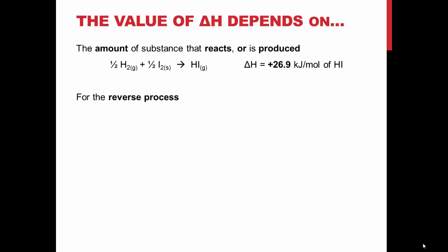The enthalpy change for a reverse process is the same magnitude as the enthalpy for the forward process, however, it is of the opposite sign. This is shown on the slide by the reaction of hydrogen and iodine gas to produce hydrogen iodide.